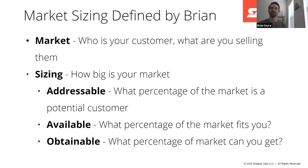So let's look at how Brian defines market sizing. The first piece is the market: who is your customer and what are you actually selling them? The size is how big is your market. Within that, you have three sub-definitions: addressable — what percentage of that market is a potential customer; available — what percentage of that market fits you; and obtainable — what percentage of that market can you actually go out and get.